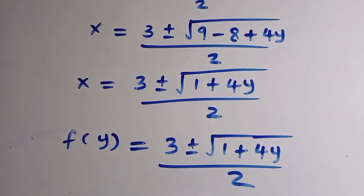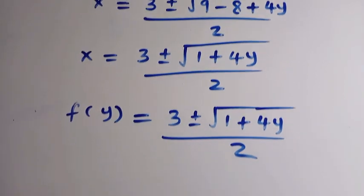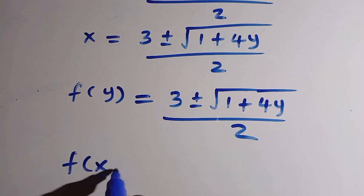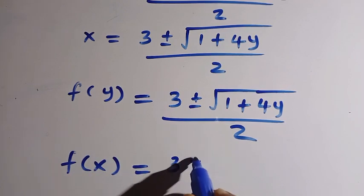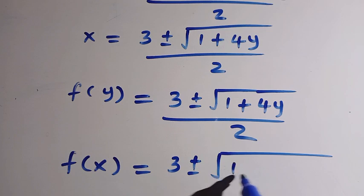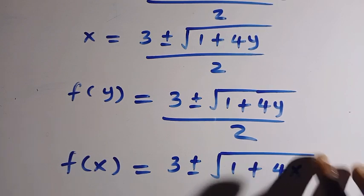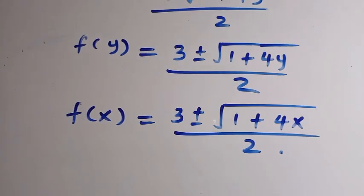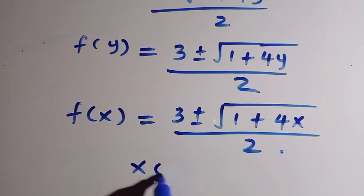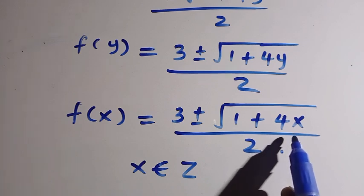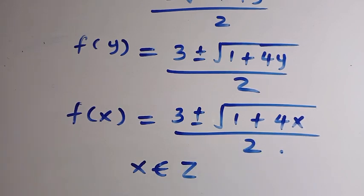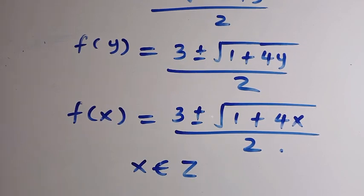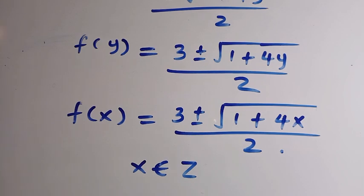Since we have to find f of x, just change y to x, and we have f of x equals 3 plus or minus the square root of 1 plus 4x, divided by 2. We have to note that x here is a member of positive integers including 0, so we are not going to get a negative value under the square root, just to avoid having a complex number. This is how to solve this problem. Thanks for watching, don't forget to subscribe, see you in the next class — never stop learning, bye bye.